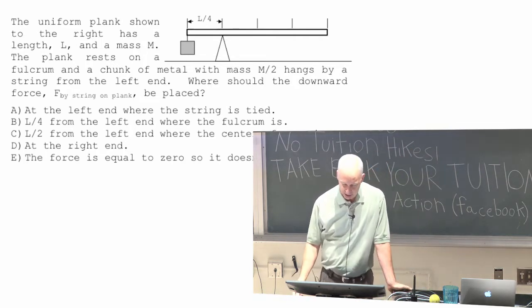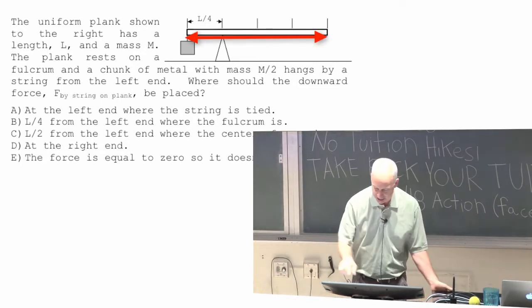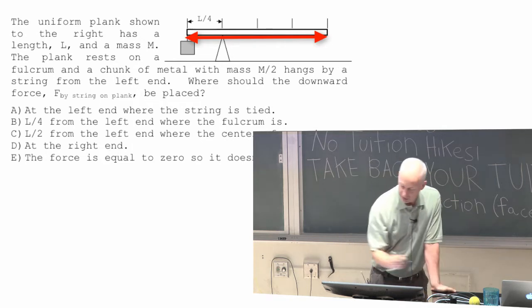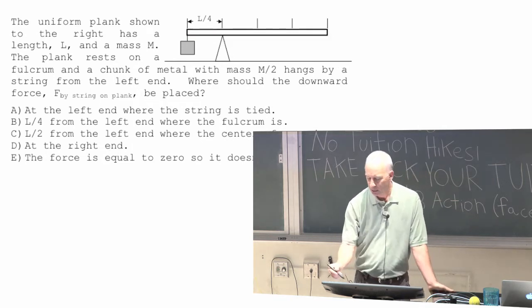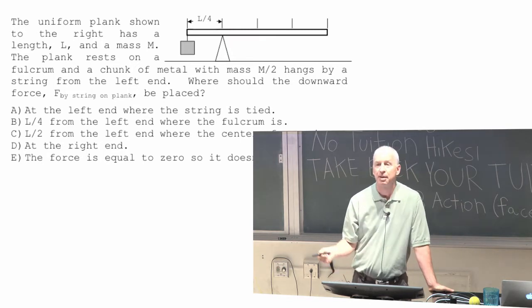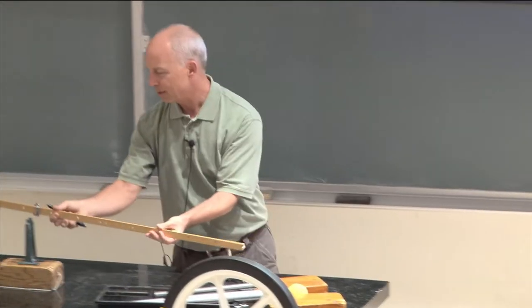Uniform plank, shown to the right, has a mass L. Sorry, a length L. The whole length of this is L. It has a mass M. So this plank itself has a mass M. It's like this thing. This weighs something. So it has a mass.